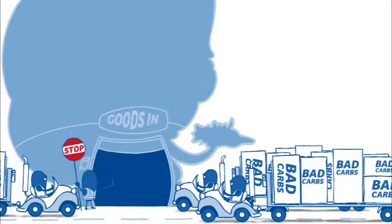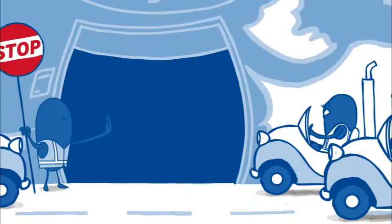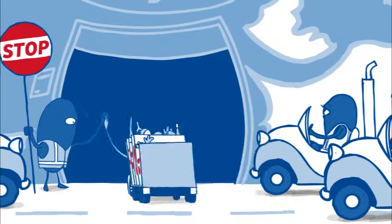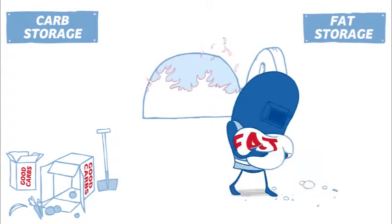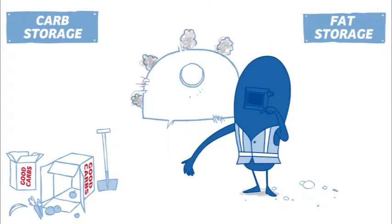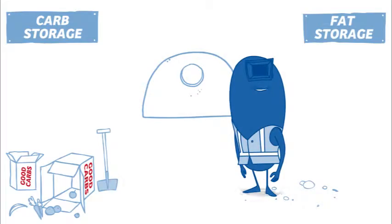But if we restrict the amount of bad carbs that come in and allow only small amounts of good carbs, the body assesses the situation and will start using the stored-up fat for energy, turning it into the ultimate fat-burning machine.